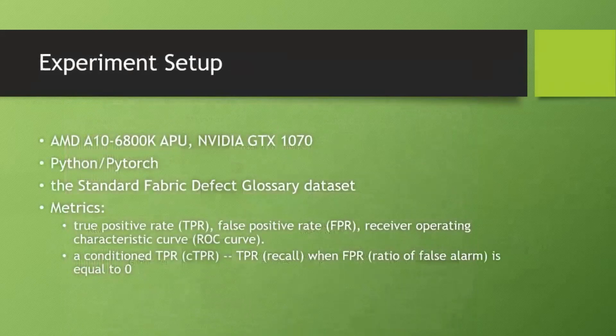Our system is built on an AMD APU and an NVIDIA GTX 1070 GPU. We use Python and PyTorch to build the system. To validate our system, we use the standard fabric defects glossary dataset, which contains high-quality fabric images at a resolution of 512 by 512. The fabric images contain different patterns, backgrounds, and defects.